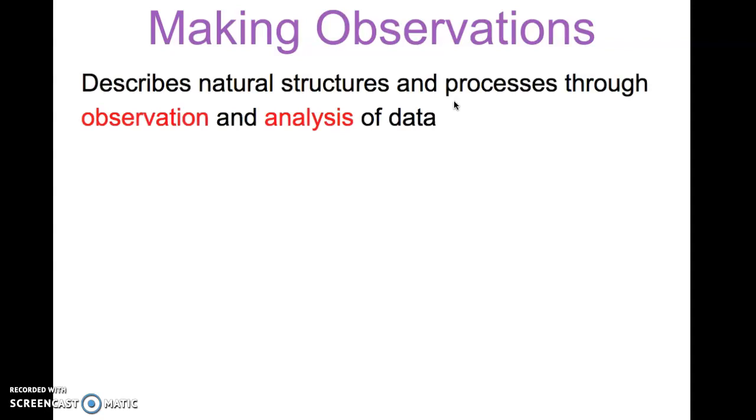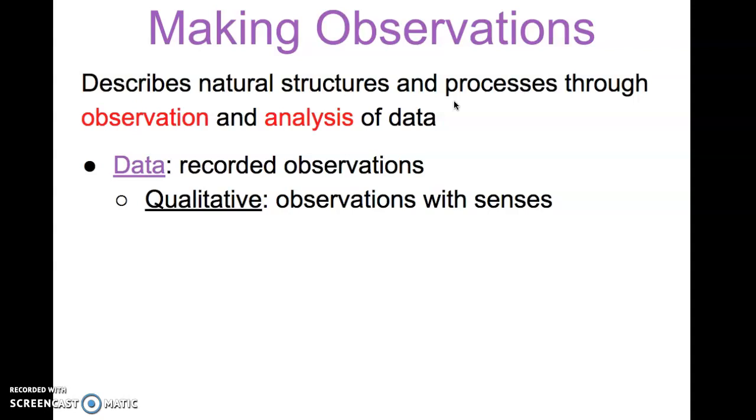When we make observations, we describe natural structures and processes through observation and analysis of data. Data is recorded observations and measurements. There are two types of data. You could have qualitative data, which is data that we collect through observations with our senses—we describe qualitative data as descriptive data.